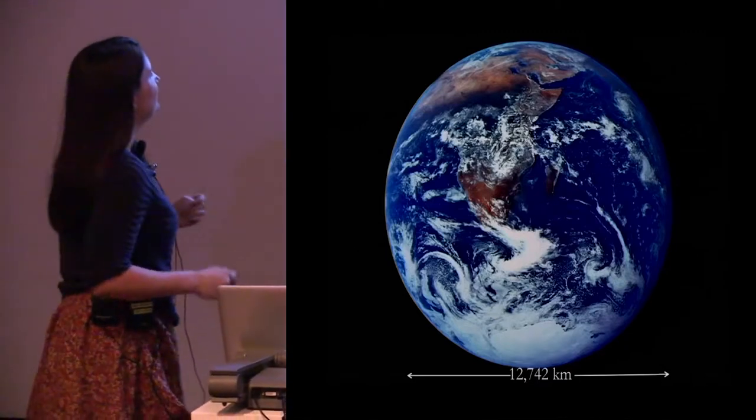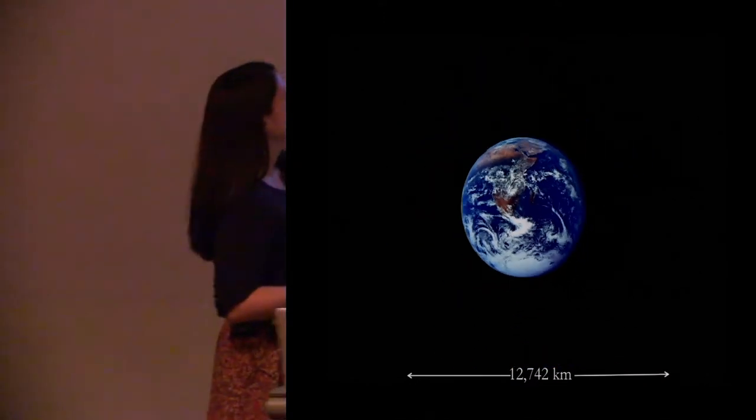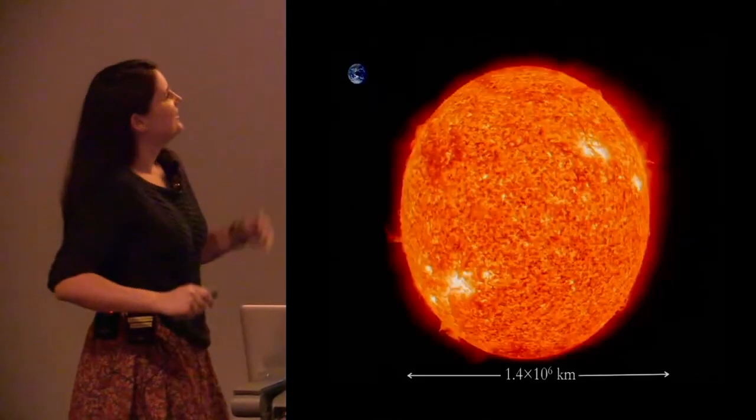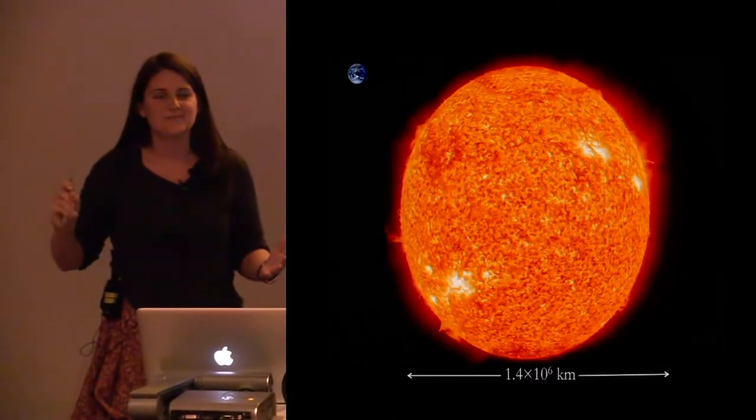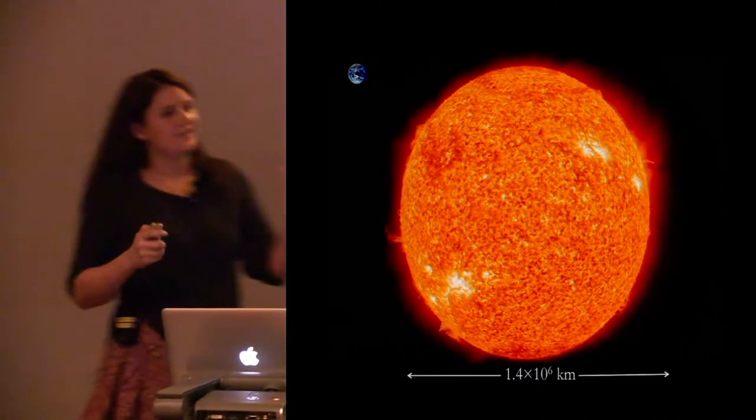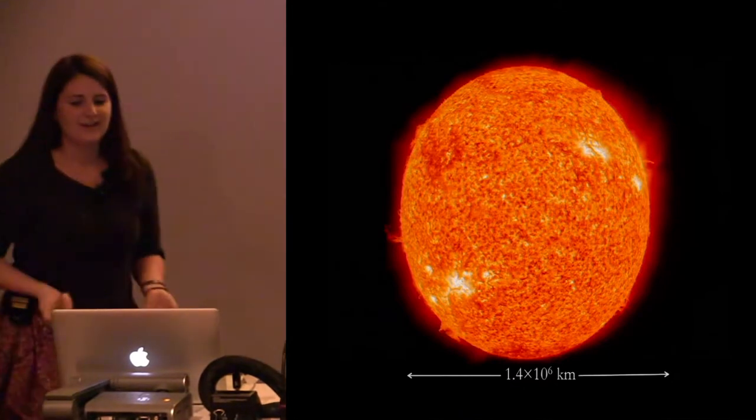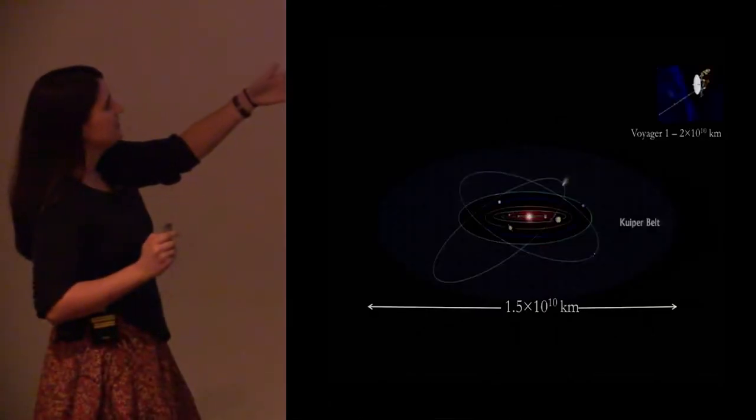So here we are on planet Earth and I guess you could already say it's a very big place. Let's shrink the Earth down even further. Keep going. Okay and here is our sun. Now our sun is so large that it would fit a hundred million Earths inside it, but you know the sun is only a small part of our solar system. So let's shrink our sun down to its position in the solar system. And our solar system is so large it's about 1.5 by 10 to the 10 kilometres.